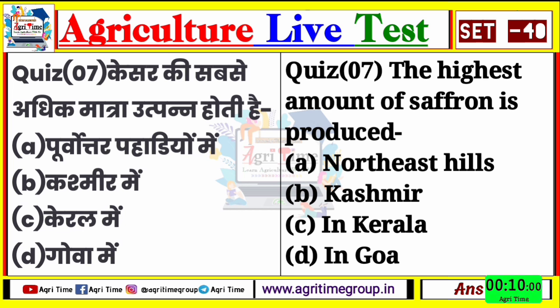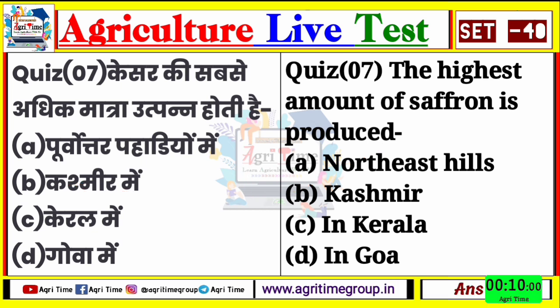Quiz 7 का right answer होगा option number B - कश्मीर। कश्मीर में जो केसर है, इसकी अधिक मात्रा उत्पन्न होती है। चलिए बढ़ते हैं अगले question की ओर question number 8।